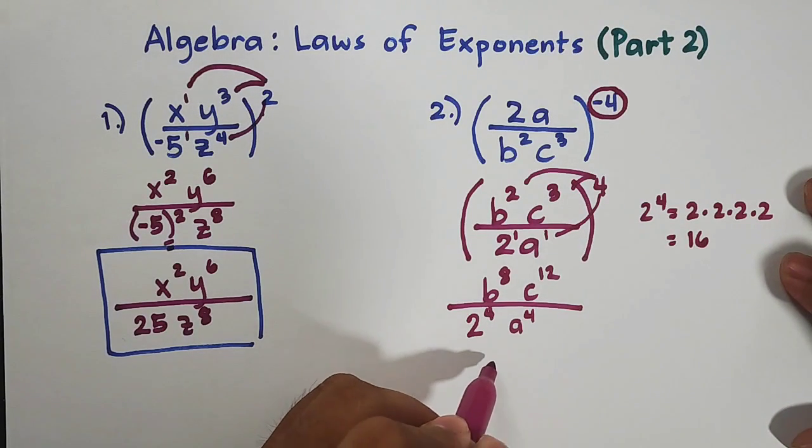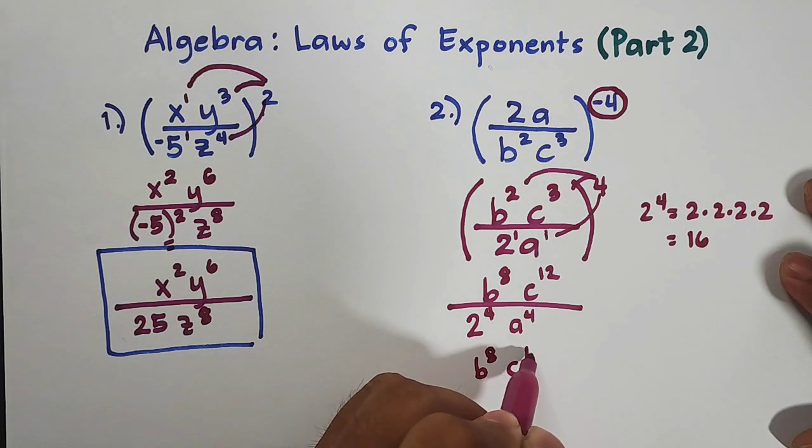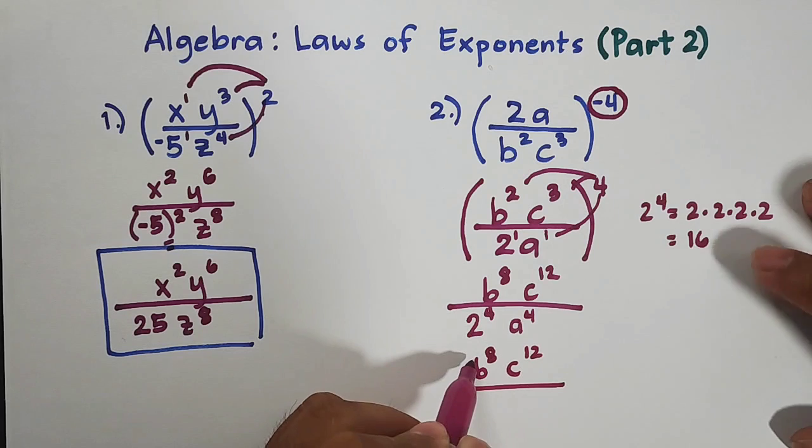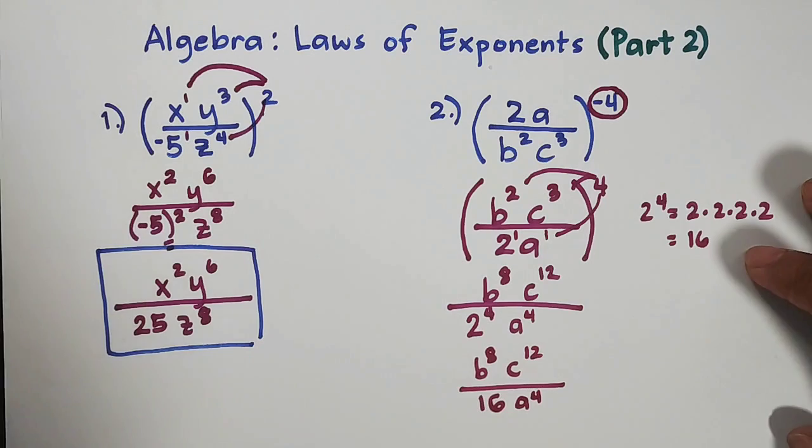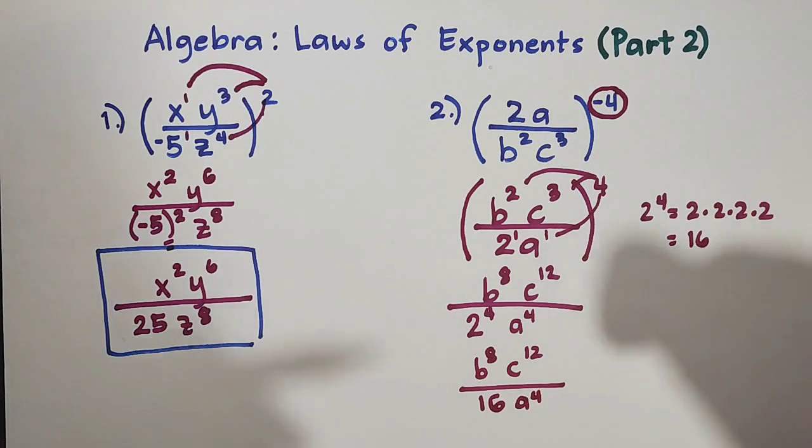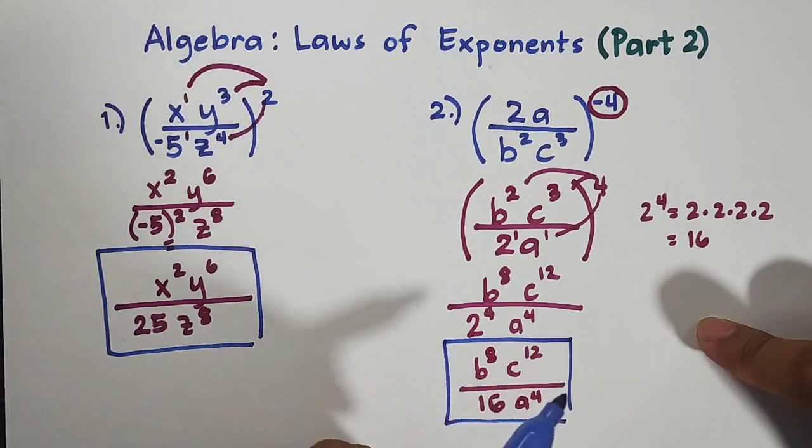So this will become b raised to 8, c raised to 12, over 2 raised to 4, which is 16, and then a raised to 4. And this is now the answer for number 2.